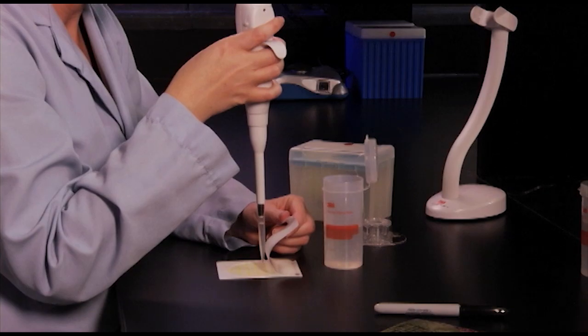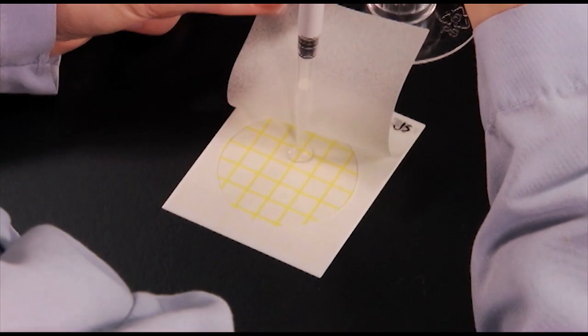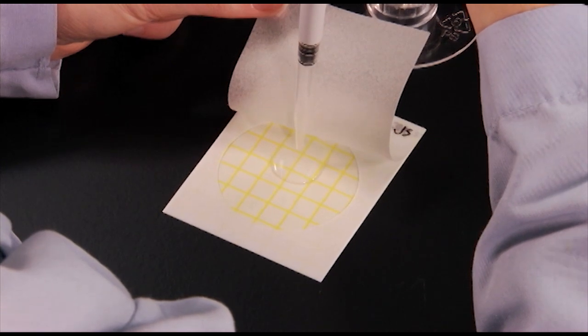Draw 1 mL of sample into the pipetter. Lift the top film and hold the pipetter perpendicular to the 3M PetriFilm plate. Pipet the sample onto the center of the bottom film.